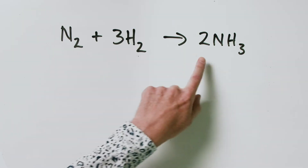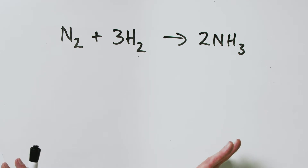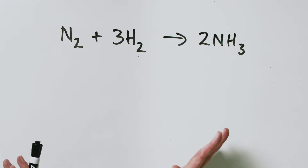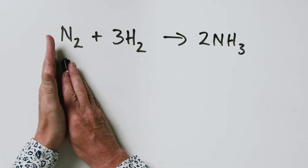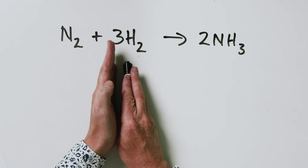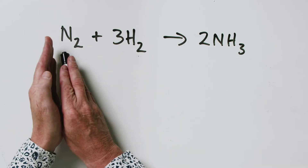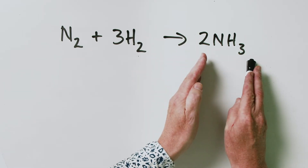So, balanced chemical equation: one mole of N₂, three moles of H₂, gives you two moles of NH₃. That is in an ideal world. What is it that the balanced chemical equation is actually telling us? It's telling us that for every mole of nitrogen that reacts, we are going to require three moles of hydrogen to react with it, and that for every mole of nitrogen that reacts, we are going to obtain two moles of ammonia.